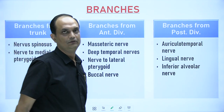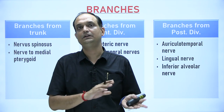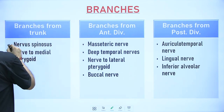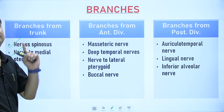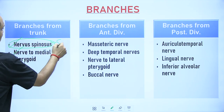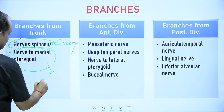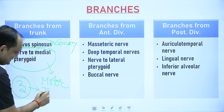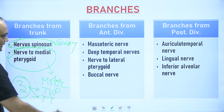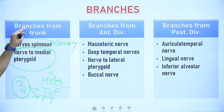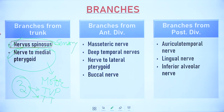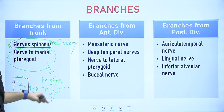What are the branches of the mandibular nerve? The branches are divided into three groups: from the trunk, from the anterior division, and from the posterior division. From the trunk there are two branches: nervus spinosus and nerve to medial pterygoid. Nervus spinosus is a sensory branch, while the nerve to medial pterygoid is a motor branch supplying three muscles: medial pterygoid, tensor veli palatini, and tensor tympani.